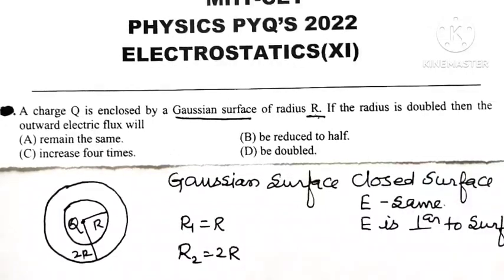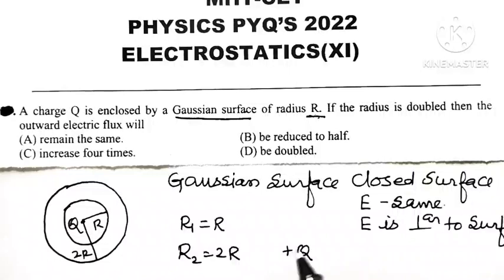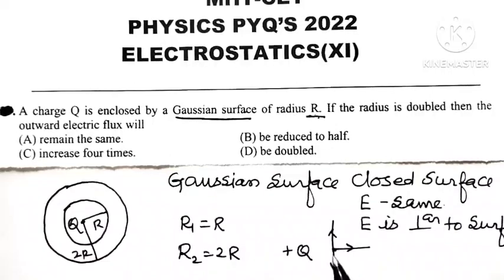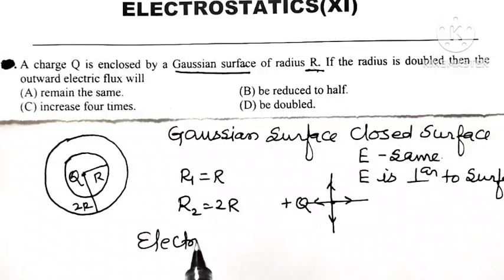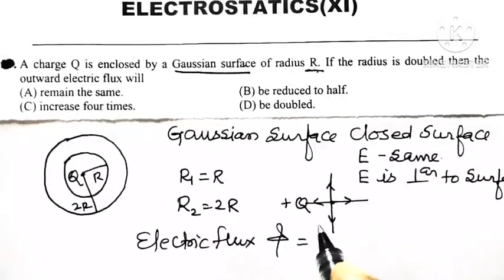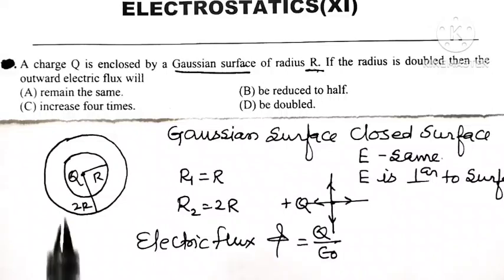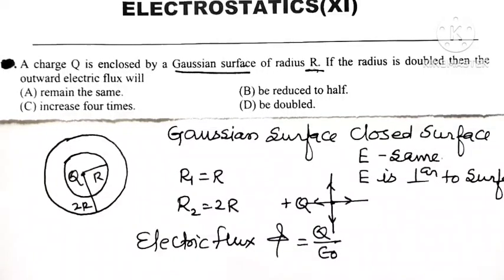For outward electric flux — remember, whenever the charge is a positive charge, we know that from a positive charge, electric field lines are radially outward in nature. The formula for electric flux produced by charge Q is phi equal to Q divided by epsilon 0, where epsilon 0 is the permittivity of free space. Because Q is a positive charge, this electric flux is outward electric flux.